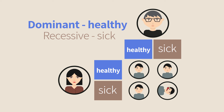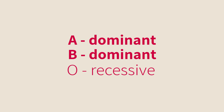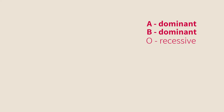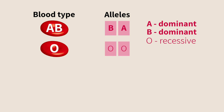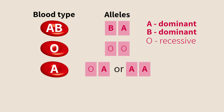Not all recessive traits are diseases, and not all genetic diseases are caused by recessive alleles. The relationship between alleles is not always dominant or recessive — sometimes two alleles have a similar degree of influence. Human blood types are a good example. There exist two dominant alleles A and B, and one recessive allele called O. An individual with A and B alleles will have blood type AB; with two O alleles, blood type O; with two A alleles or A and O, blood type A; and with two B alleles or B and O, blood type B.